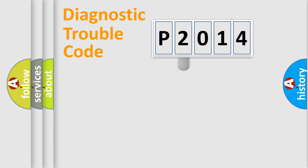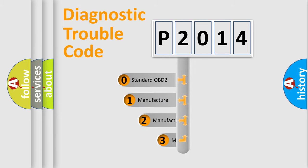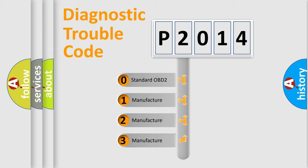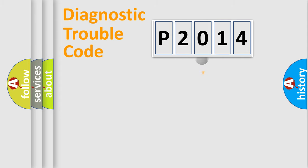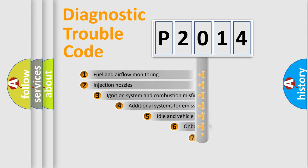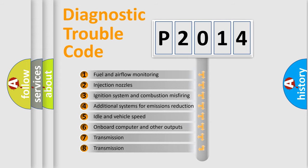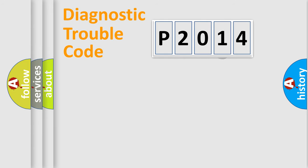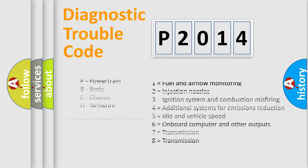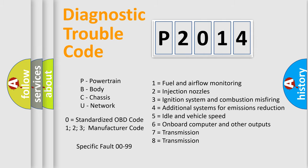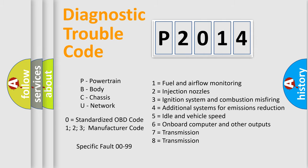This distribution is defined in the first character of the code. If the second character is expressed as zero, it is a standardized error. In the case of numbers 1, 2, or 3, it is a manufacturer-specific error. The third character specifies a subset of errors. The last two characters define the specific fault of the group. This division is valid only when the second character is zero.